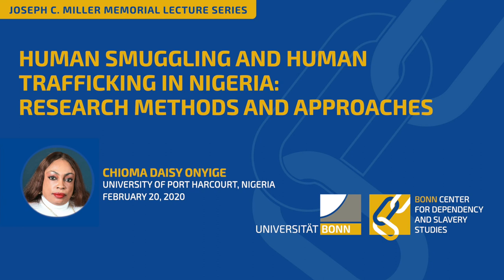Doing research into human trafficking and human smuggling in a country like Nigeria can be very daunting, considering the depth of data issues, the large population of over 200 million people — the largest in Africa — and the criminal and sensitive nature of the subject matter. Nigeria doesn't keep data well. The only agency with some kind of data is NAPTIB, the National Agency for the Prohibition of Trafficking in Persons, and the data they have is mostly cases of prosecution, with very low prosecution rates.